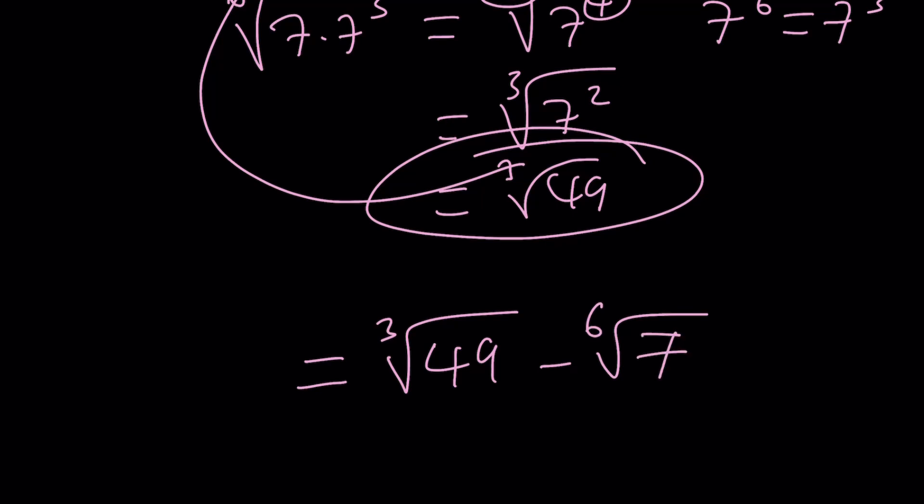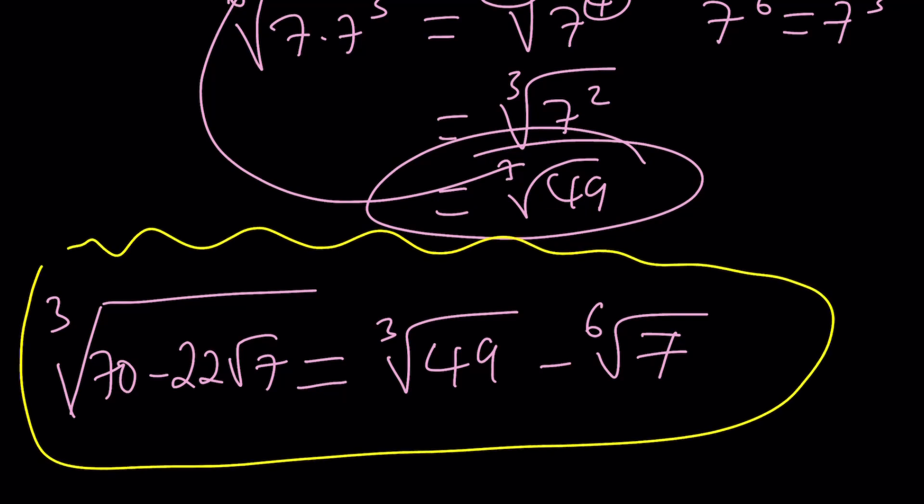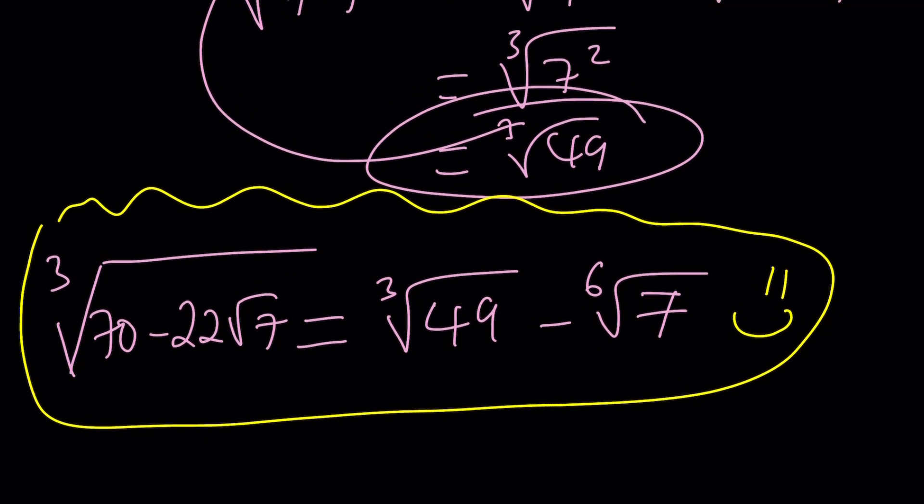And this is actually our original expression cube root of 70 minus 22 root 7 denested. And if you don't believe that, go ahead and cube both sides and you're going to see. Again, XJ Will 1, thank you for the idea. This was a beautiful problem, and I'm glad to have solved it. And this brings us to the end of the video. Thank you for watching. I hope you enjoyed it. Please let me know. Don't forget to comment, like, and subscribe. I'll see you next time with another video. Until then, be safe, take care, and keep up the good work. Bye-bye.